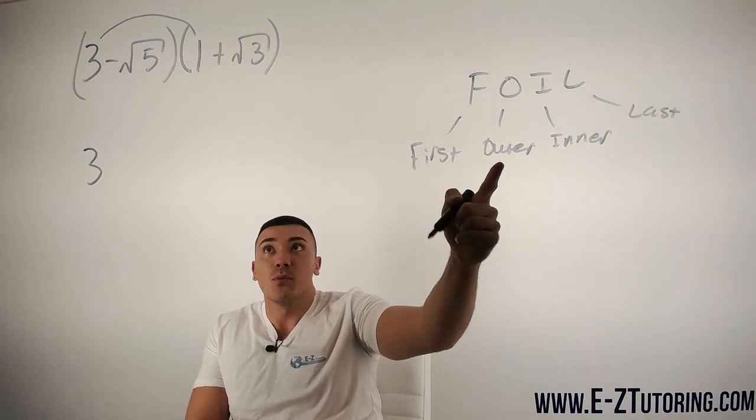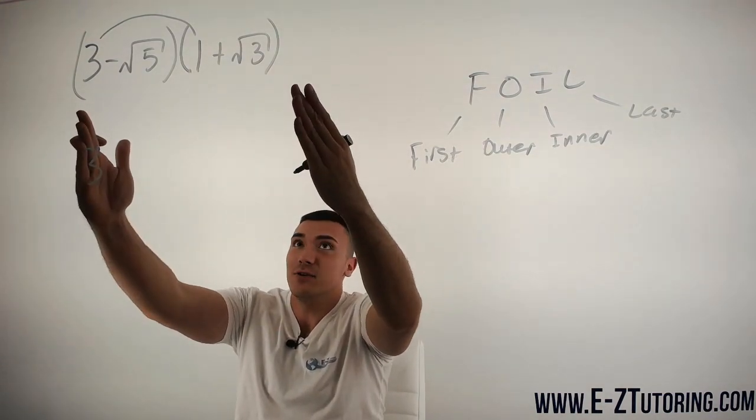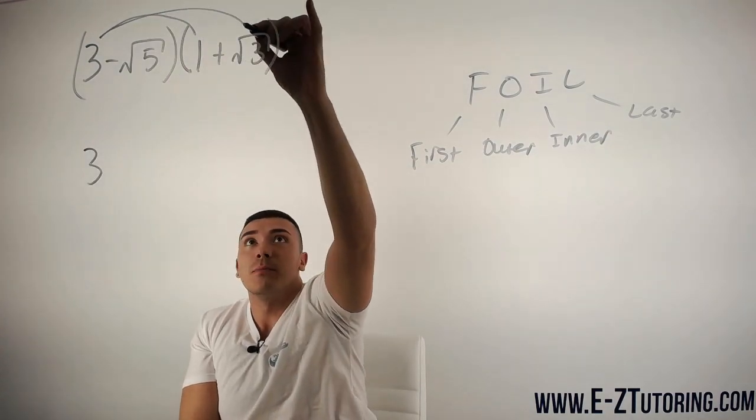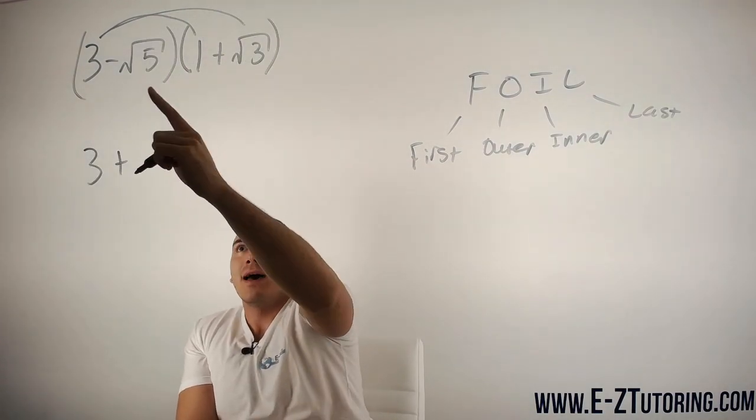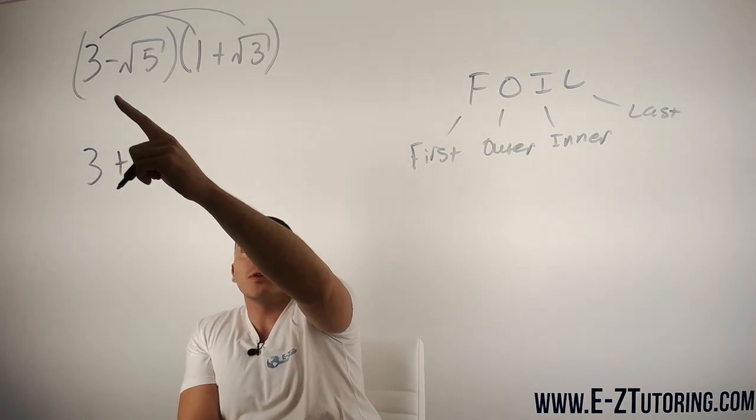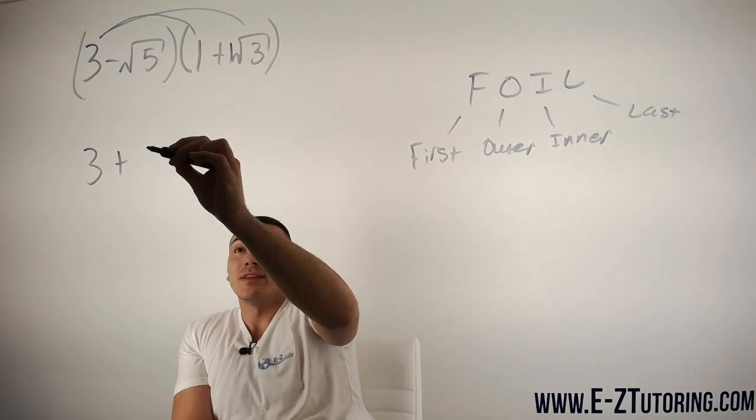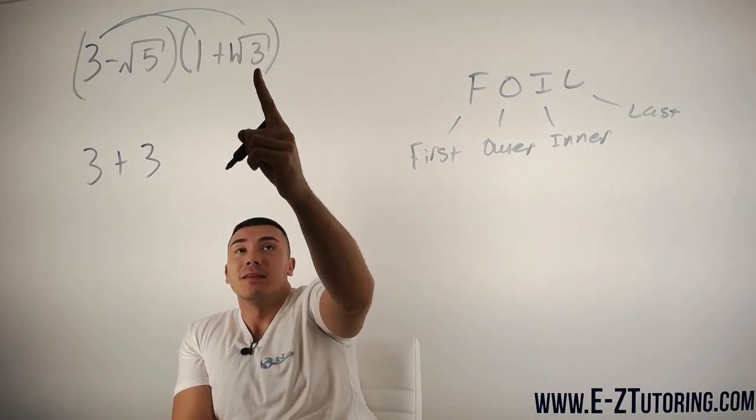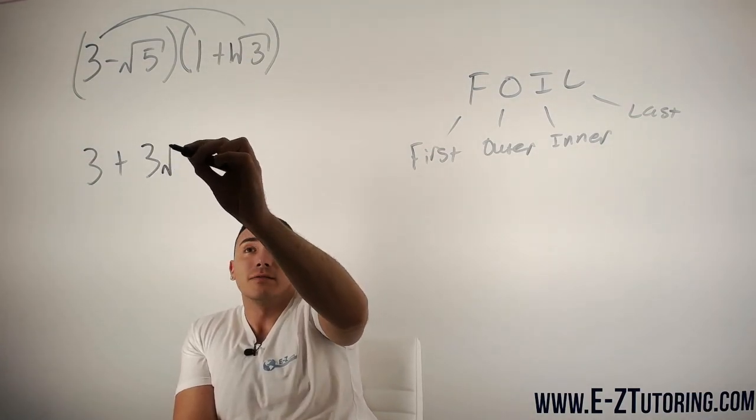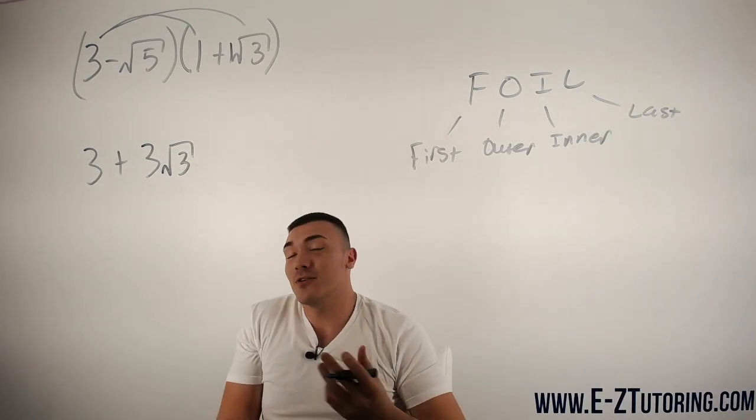Then the outer terms, we want to multiply the outside terms, the 3 and the square root 3. So we multiply these. Now, this is not in the square root so we just multiply it by the number out front which is a 1, 3 times 1 gives us 3 and then we just have square root of 3 which has nothing else to multiply with so we write 3 root 3.